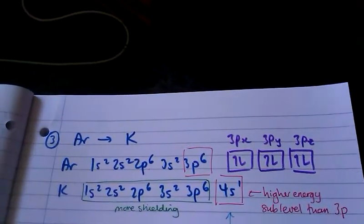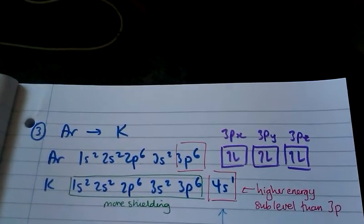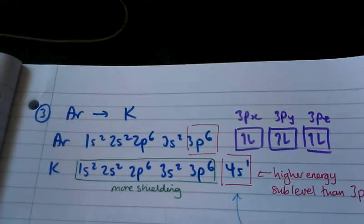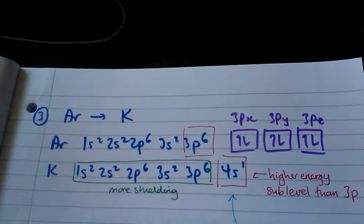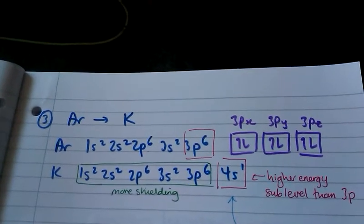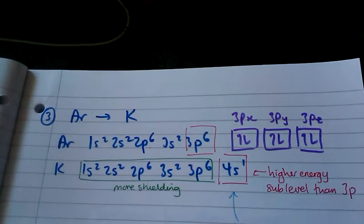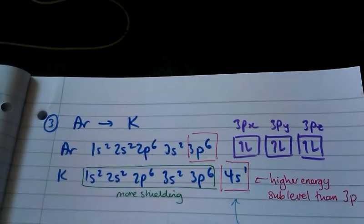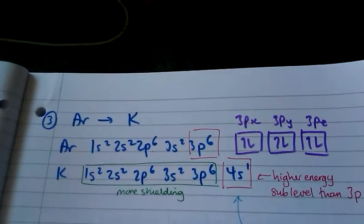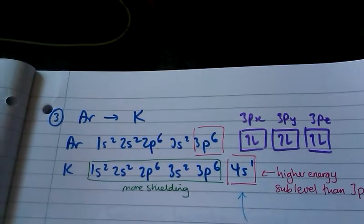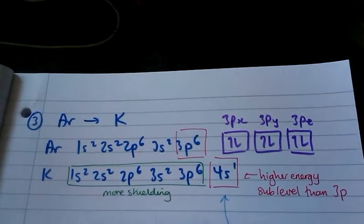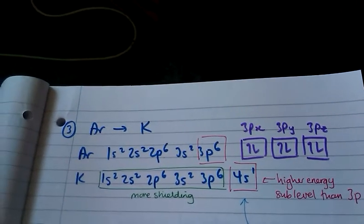Going from argon to potassium, there is a decrease in first ionization energy again. The outer electron in potassium is in the 4s sublevel, which is higher energy than the 3p sublevel in argon. The outer electron in potassium is also more shielded from the nucleus, so it is held on to less strongly than the outer electron in argon, making it easier to remove.